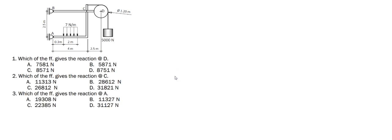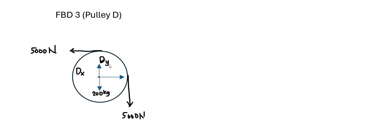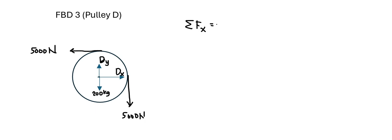Proceeding with the free body diagram of the pulley at D, we can see that we only have 2 unknowns, that is DX and DY. We can solve for these values using summation of forces in the vertical and horizontal directions. Taking summation force X equal to 0: DX minus 5,000 newtons equals 0, so DX equals 5,000 newtons.